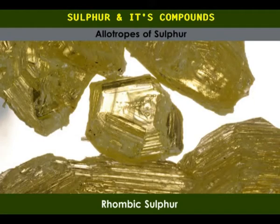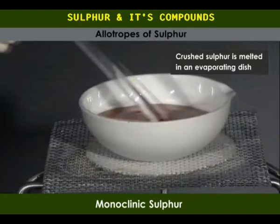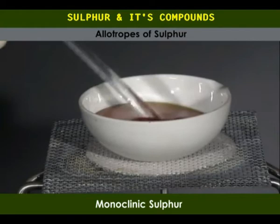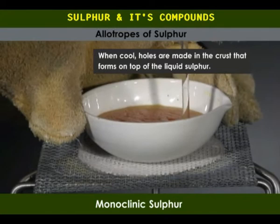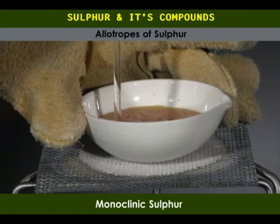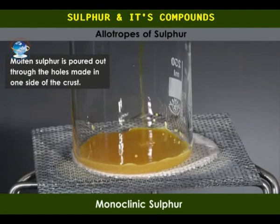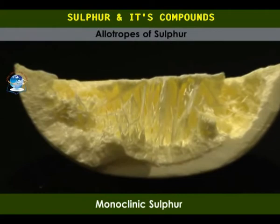Monoclinic sulfur is only stable above 95.3 degrees Celsius. Needle-shaped crystals can be prepared from molten roll sulfur. The sulfur is melted carefully and then allowed to cool. When cool, holes are made in the crust which forms on top of the liquid sulfur. Once the solid crystals form, the molten liquid inside is poured out through these holes. When the cool solid is broken open, monoclinic crystals can clearly be seen.